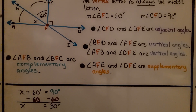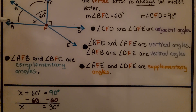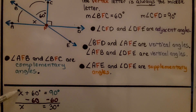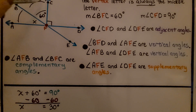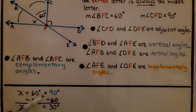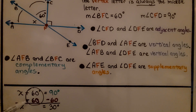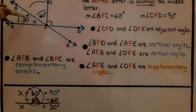We can find the measure of angle AFB — what X equals — by doing a one-step equation. We say: X plus 60 equals 90 degrees. Using inverse operations, we subtract 60 from each side of the equal sign. Plus 60 minus 60 eliminates to zero, and we're left with X equals 30 degrees. So that angle is 30 degrees.